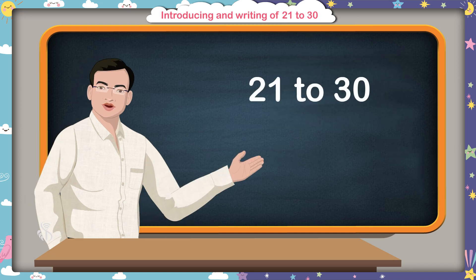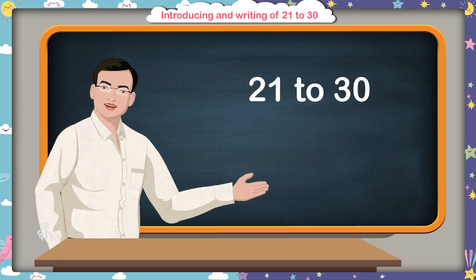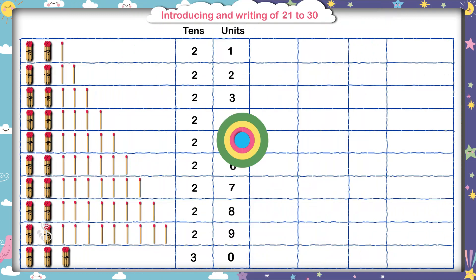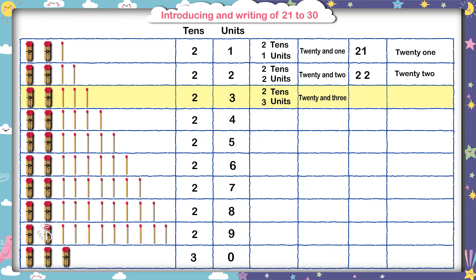Now, we will read numbers from 21 to 30. Look at this chart please. 2 tens 1 unit, 21. 2 tens 2 units, 22. 2 tens 3 units, 23.